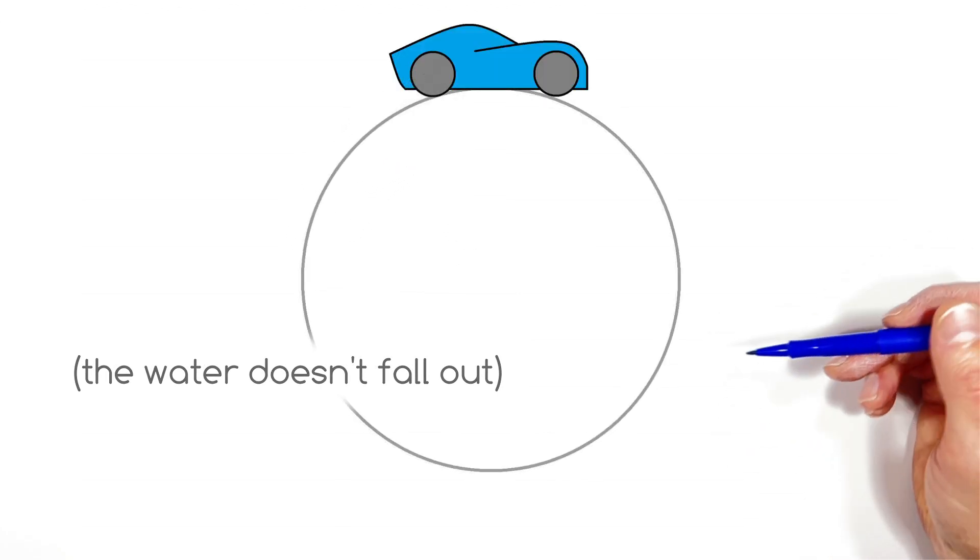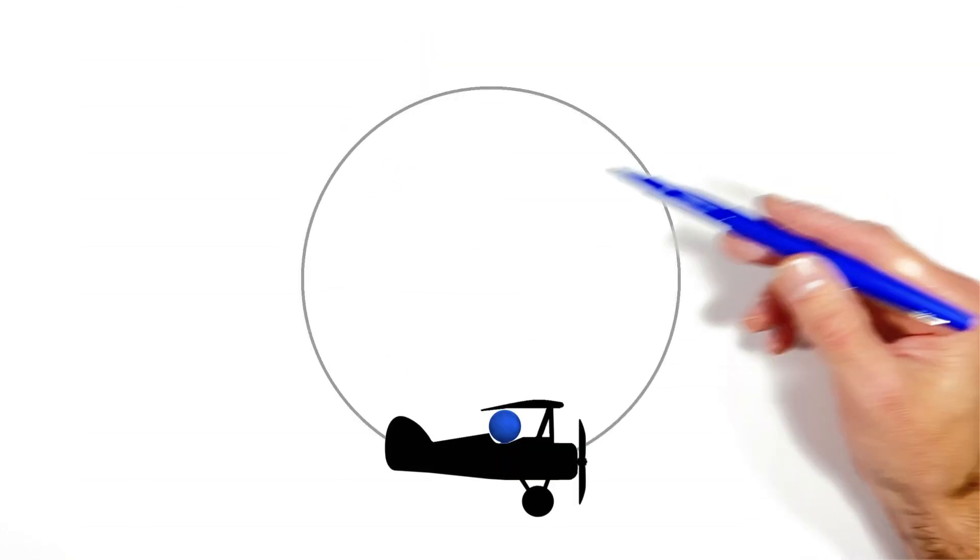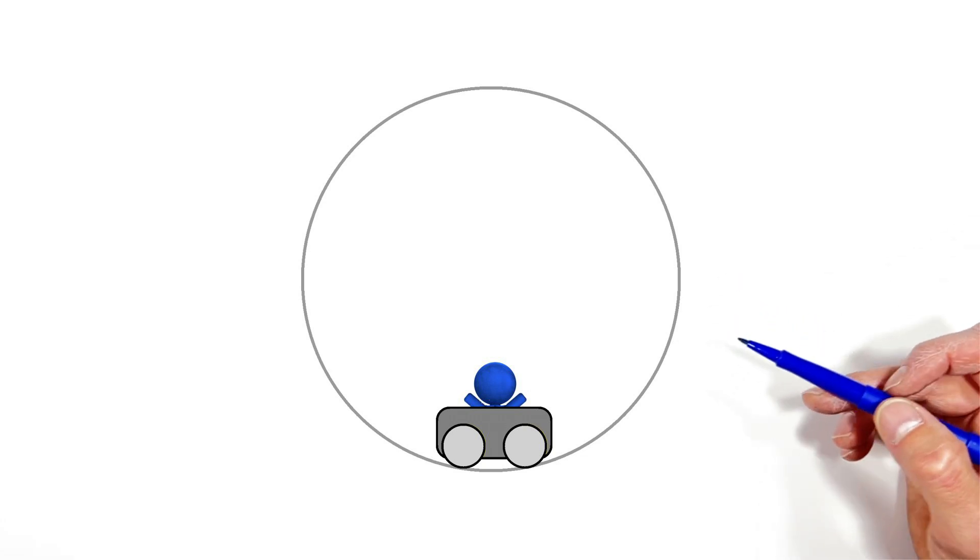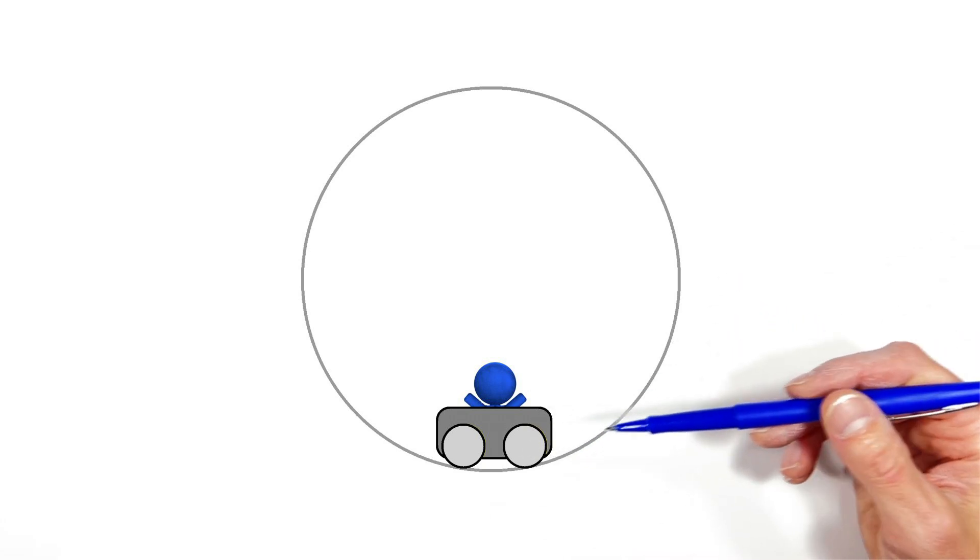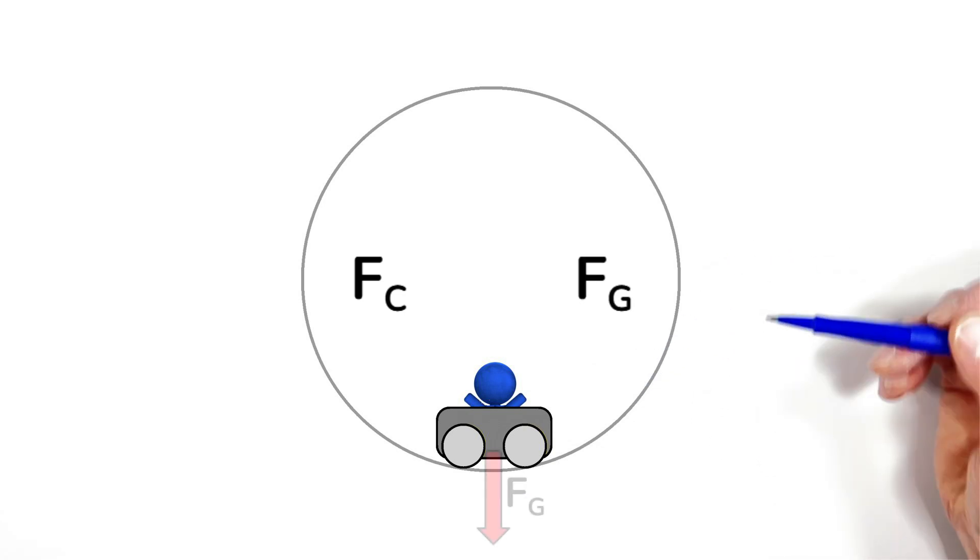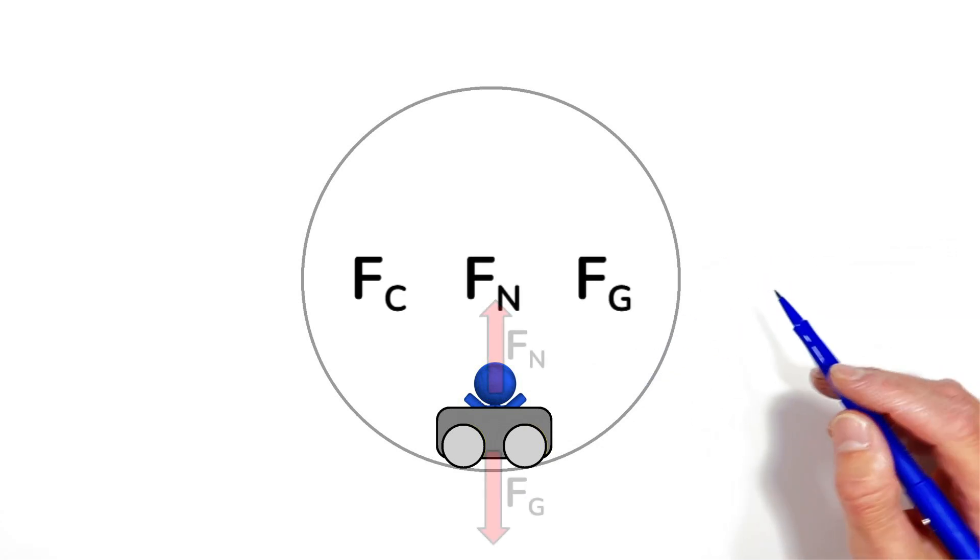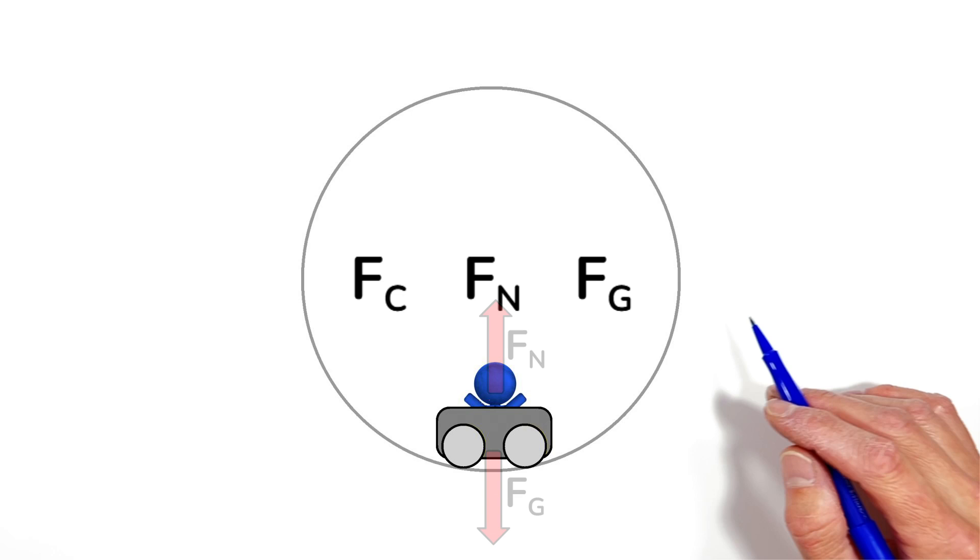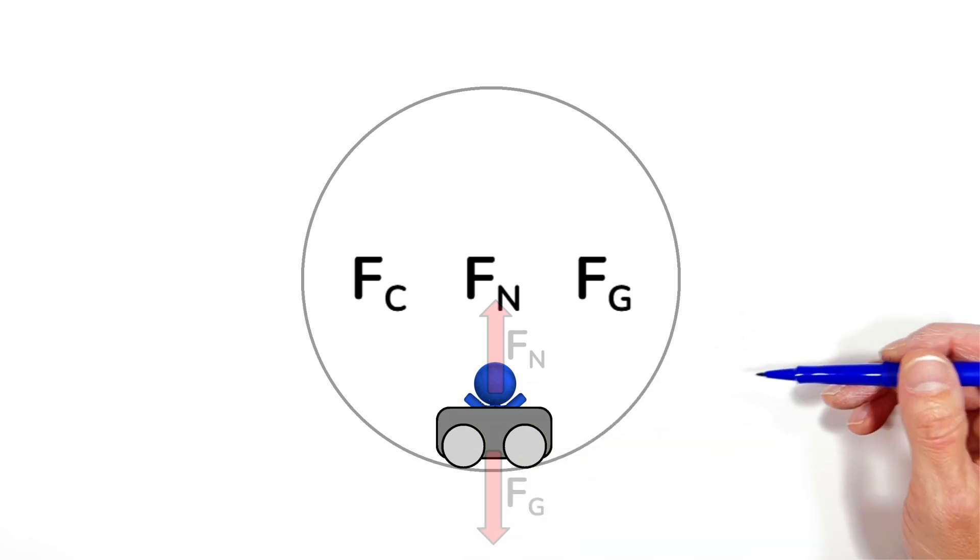Now these are all really just the same problem dressed up differently over and over again. In all these problems, there's really just the same three forces acting on each object. There's the centripetal force, gravity, and the normal force. But where people get stuck is in how to set up the math relating those three forces to one another.